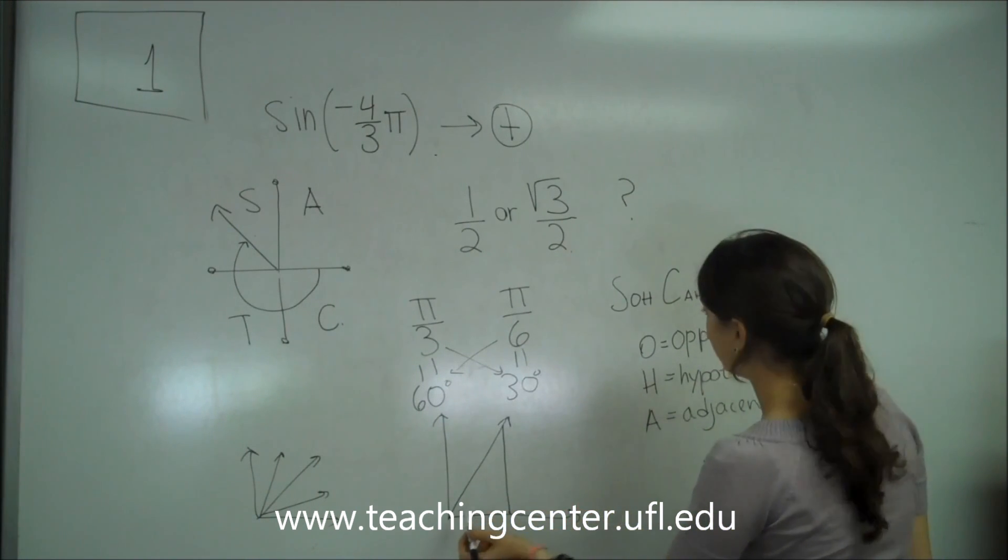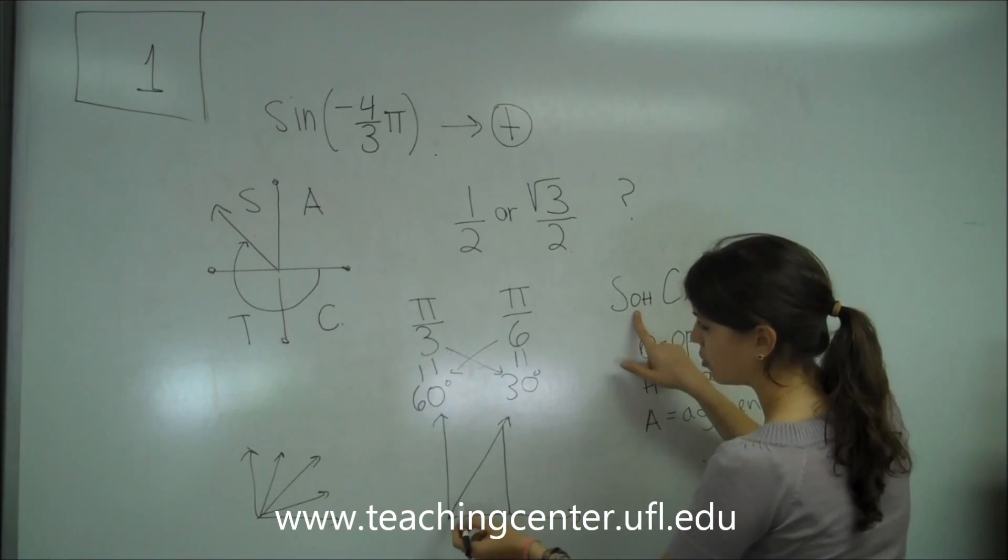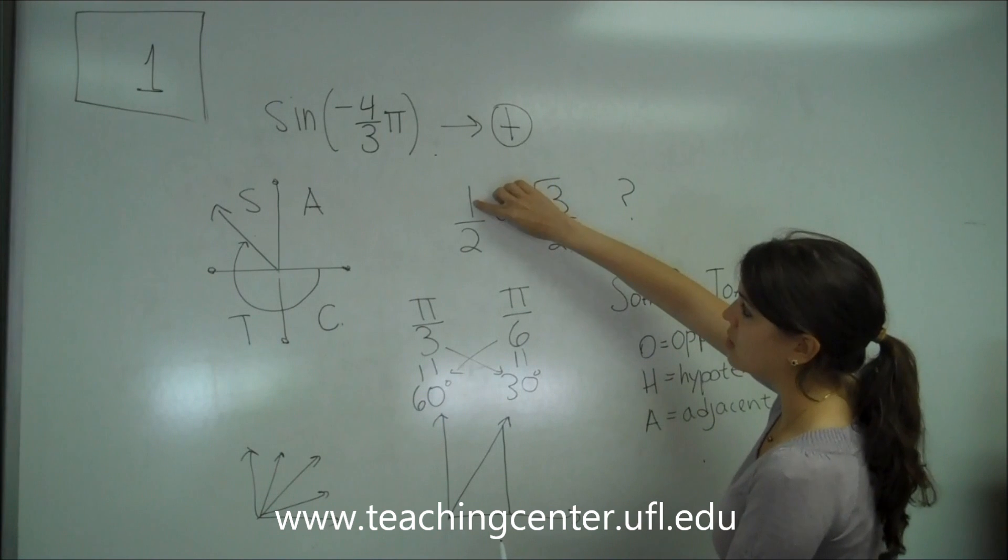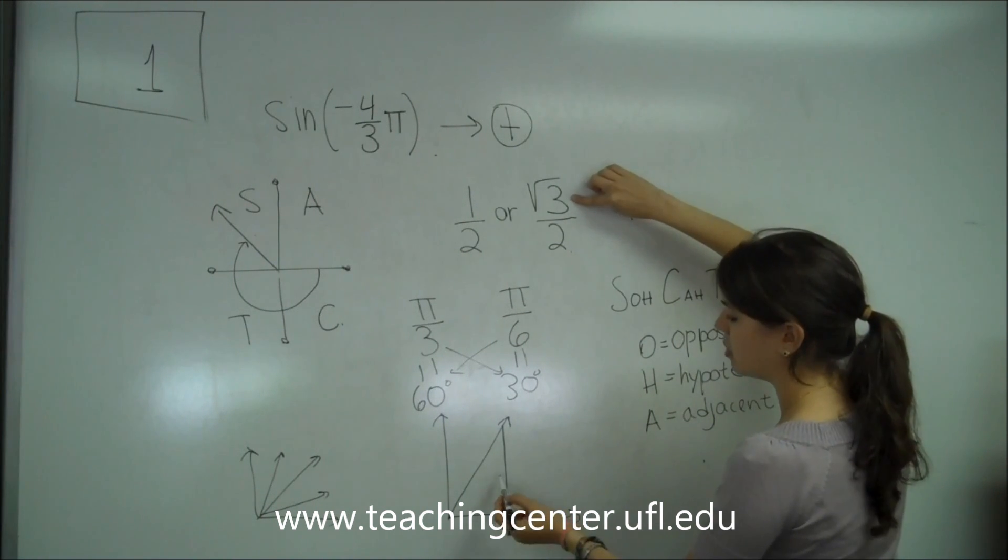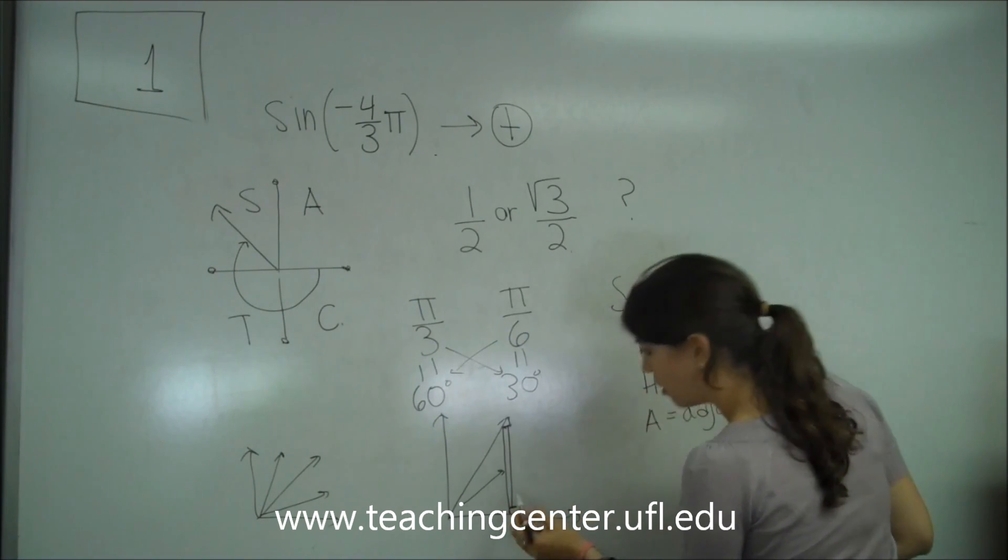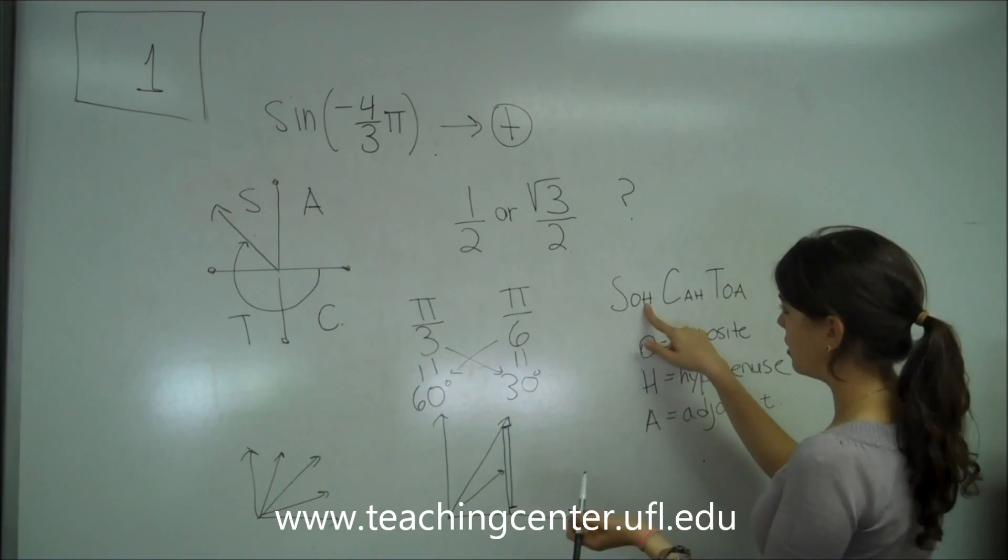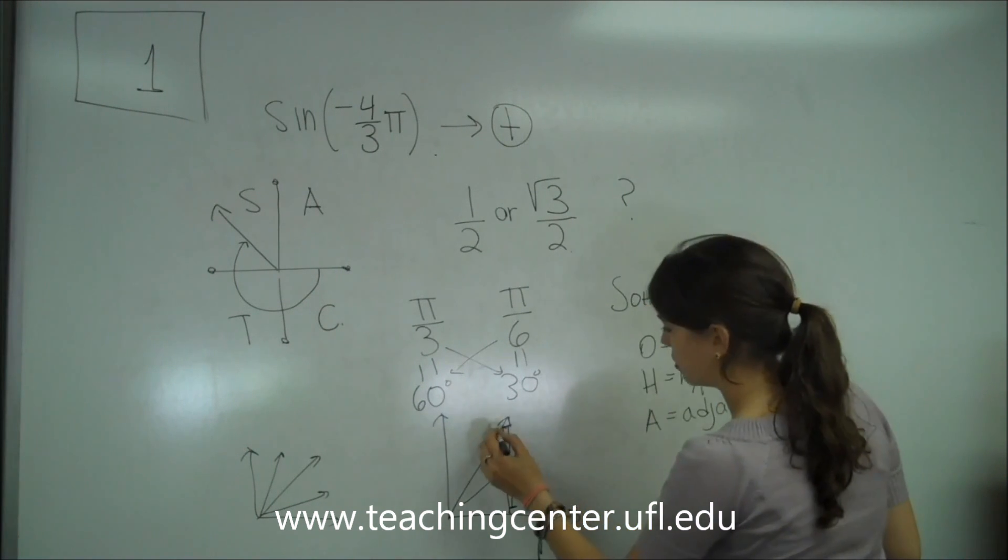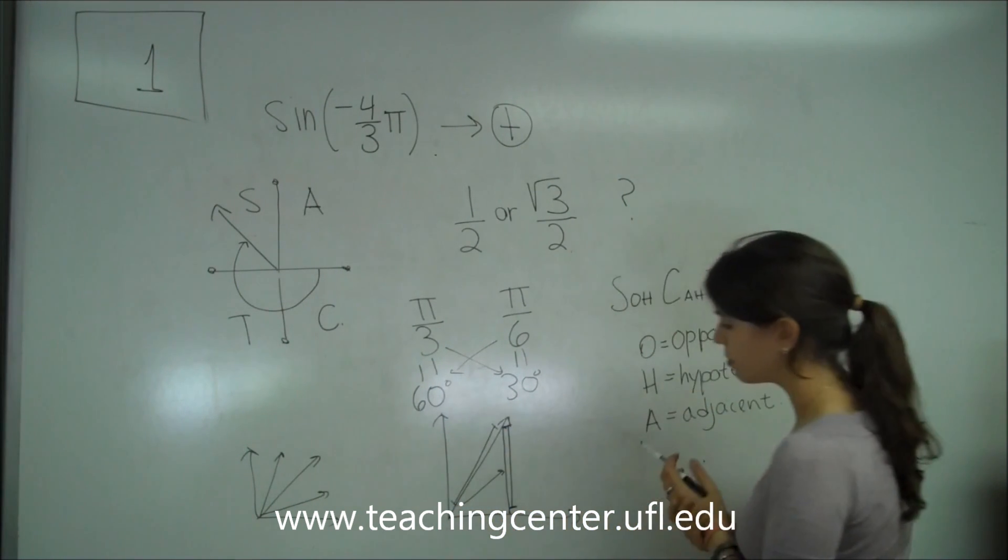So, for sine here, we want the opposite. So, the value of sine, this number on the top is going to be the opposite, which means this one. So, kind of like the height of this, over the hypotenuse.